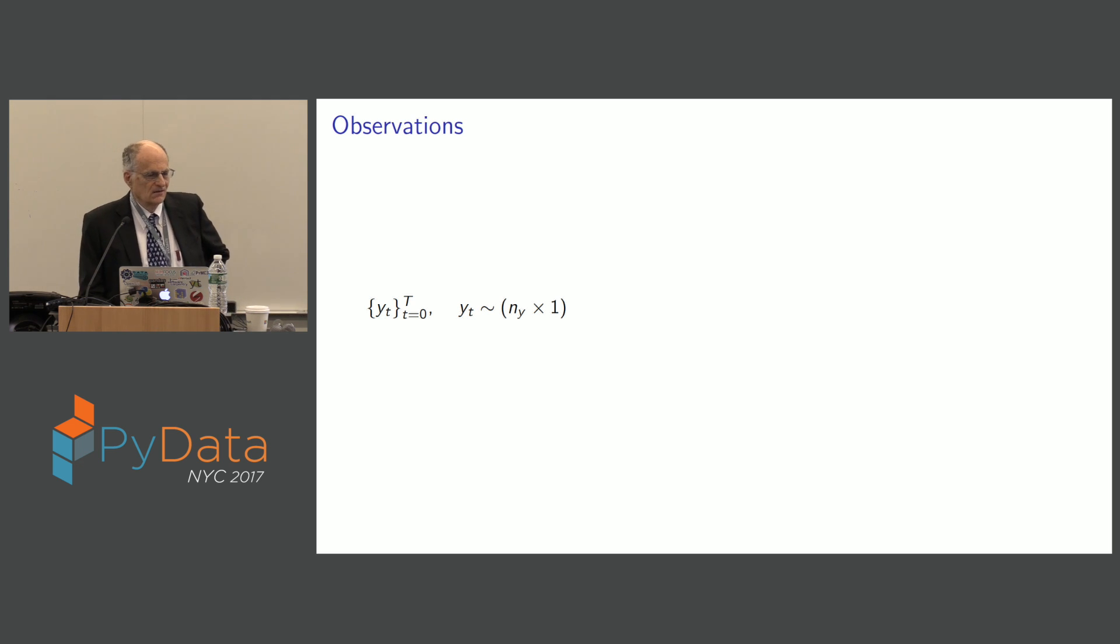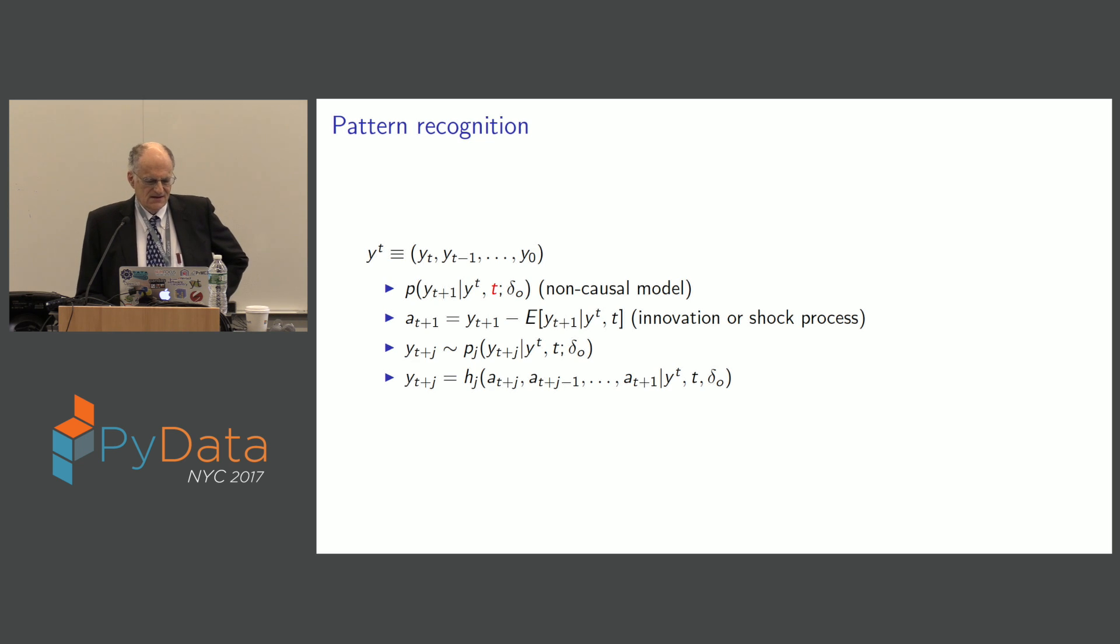So I'm going to tell you what observations are. I'm going to call them Ys and I'm going to index them by time. And those are my observations. And Y is a vector. Pattern recognition. So what I'm going to do is I'm going to have a non-causal model. I'm going to have a history of observations, call it Y to the T. That's just going to be a probability of tomorrow, Y, conditioned on the history up to time T and some parameters. I'm going to call that a non-causal model.